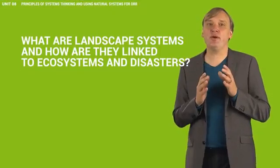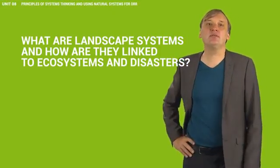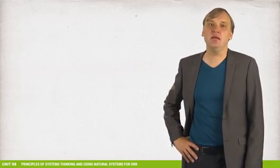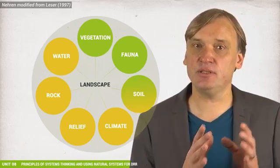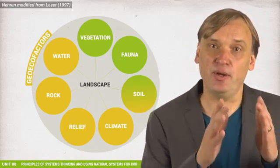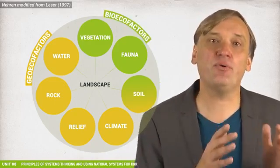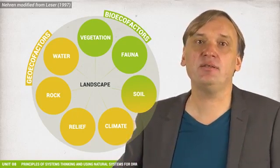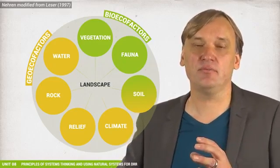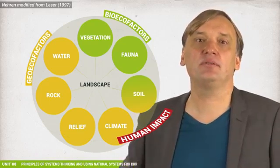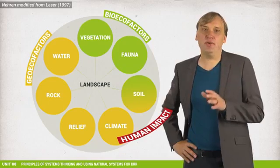What are landscape systems and how are they linked to ecosystems and disasters? In geography and landscape ecology we use the concept of landscape systems as a theoretical framework to describe, analyze and manage the environment. Landscape systems consist of natural subsystems — the so-called geo-ecofactors, which include climate, relief, rock, and water — and the so-called bio-ecofactors, which include vegetation and fauna. Soil represents an intermediate category, as soils are made of biotic and abiotic compounds. Human systems interact with these natural subsystems and have a fundamental impact on landscape development.